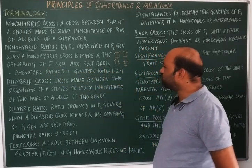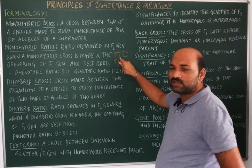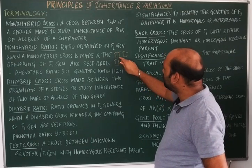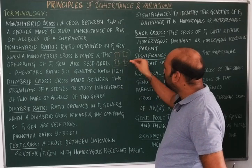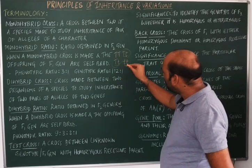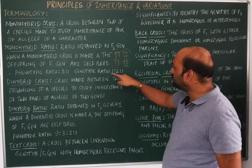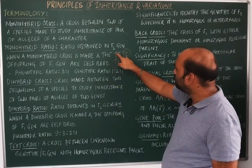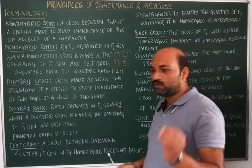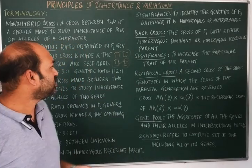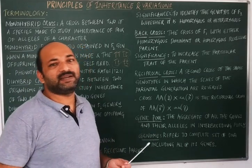The genotypic ratio in the F2 generation is 1:2:1 — one homozygous dominant (TT), two heterozygous (Tt), and one homozygous recessive (tt). This is the monohybrid ratio obtained in the F2 generation when the F1 generation is self-crossed or self-hybridized.